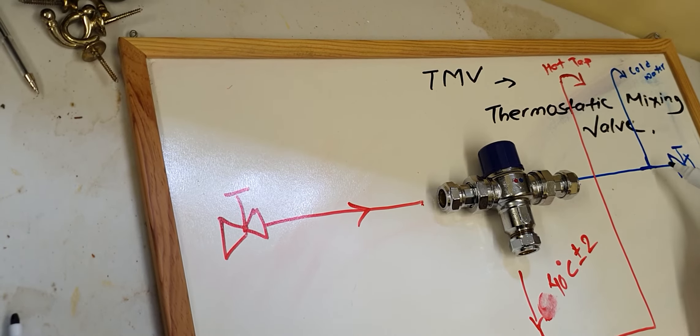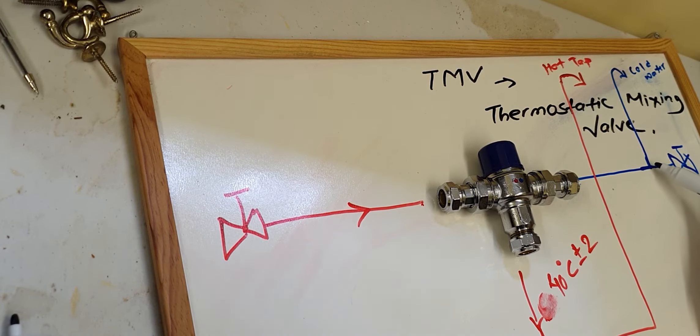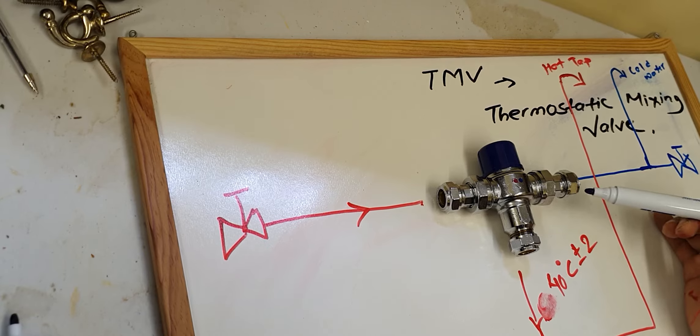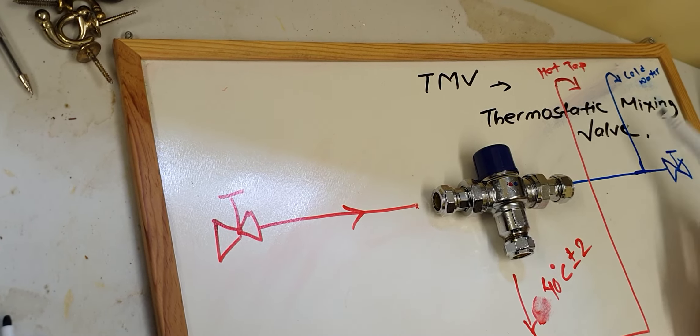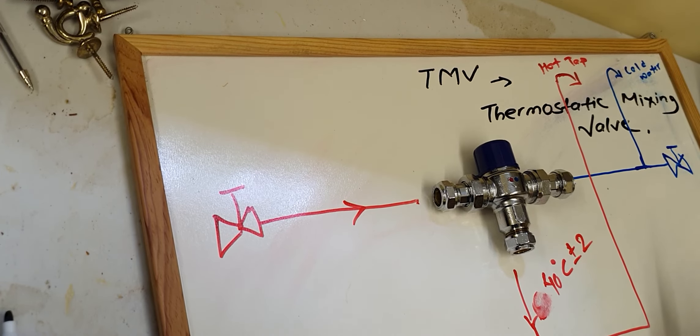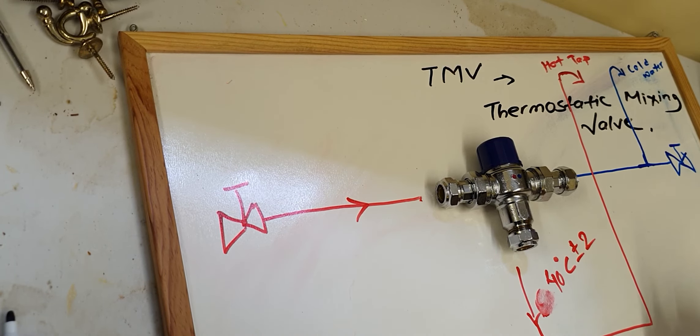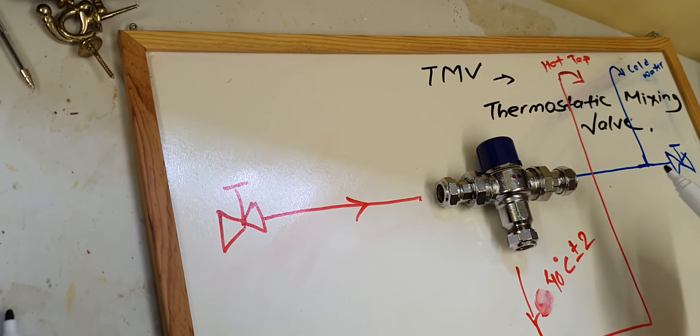Hot water this side, cold water this side. You will split the pipe - one goes to the TMV, another goes to the cold water tap, and the blended water will go to the hot water tap. This is how TMV works.